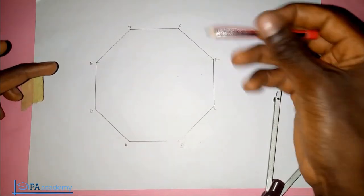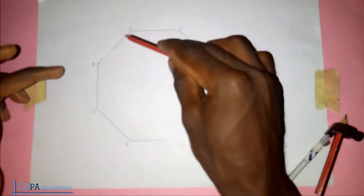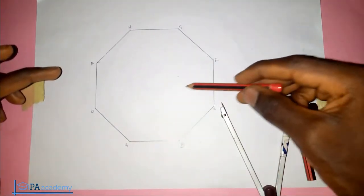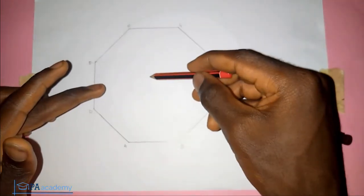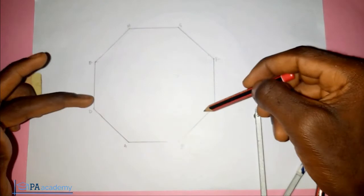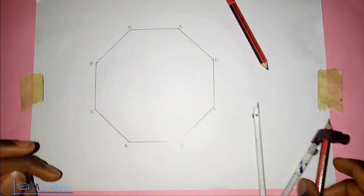You can see we have one, two, three, four, five, six, seven, eight angles inside this octagon. So just bisect any two of them to get the center. When you bisect them, where they meet will represent the center of the circle.